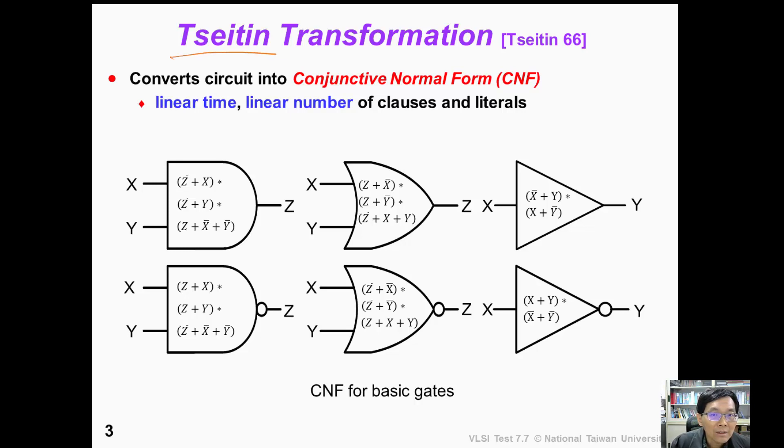In 1966, Tseitin proposed a transformation that converts the circuit into Boolean formula. In this figure, we show CNF transformation for six different kinds of basic logic gates.